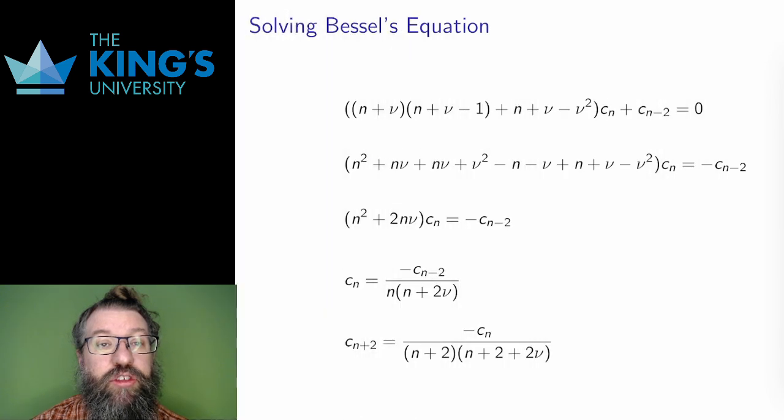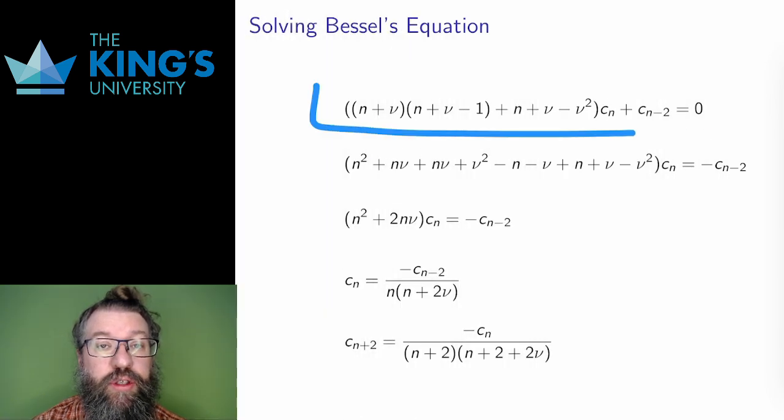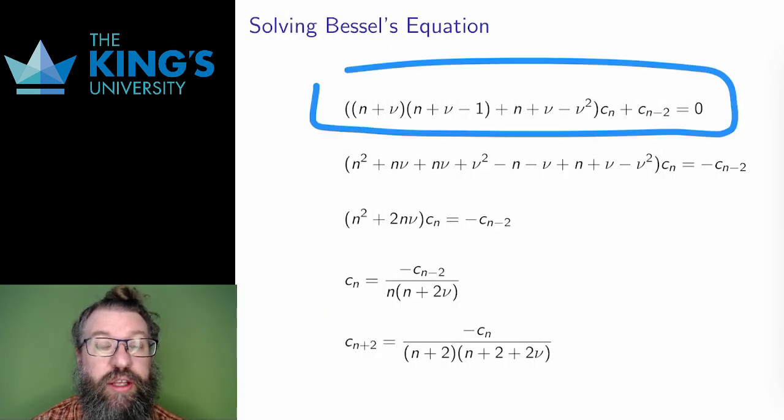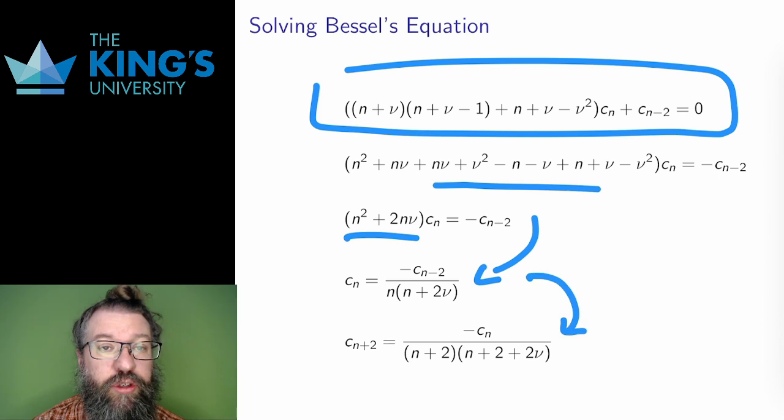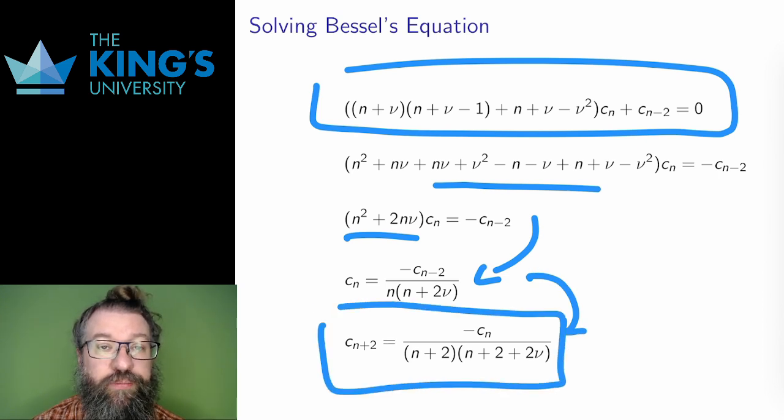Then this is the general term for the coefficients. I solve for cn to get the recurrence relation. Lots of nice cancellation happens here, which is good, and I get this recurrence relation. I will shift it again as it's convention to have cn on the right, and now I need to work with this relation to calculate the coefficients of the series.